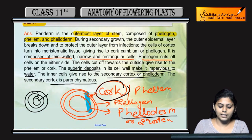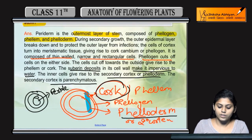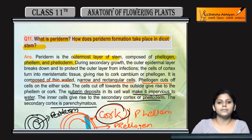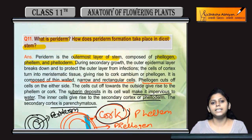These three layers — phellem (cork), phelogen, and phelloderm — are together called periderm, which is the outer layer of the plant that develops during secondary growth.